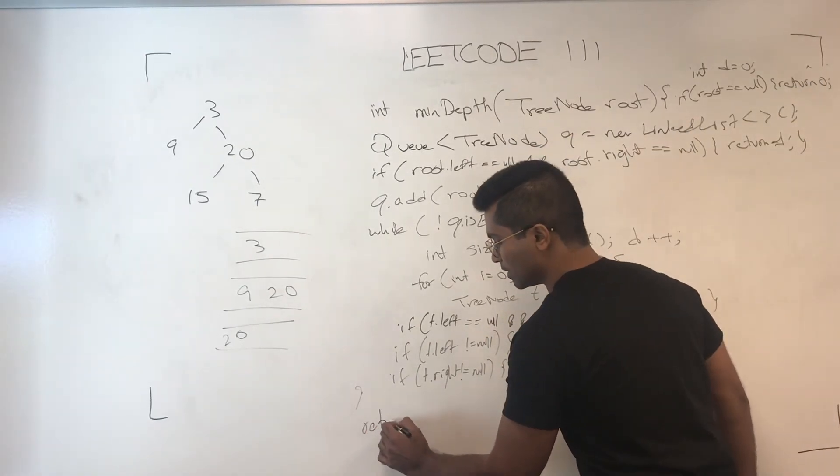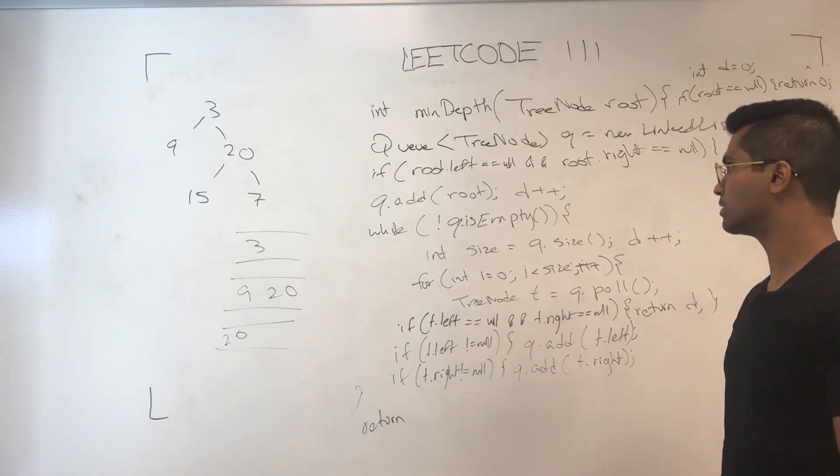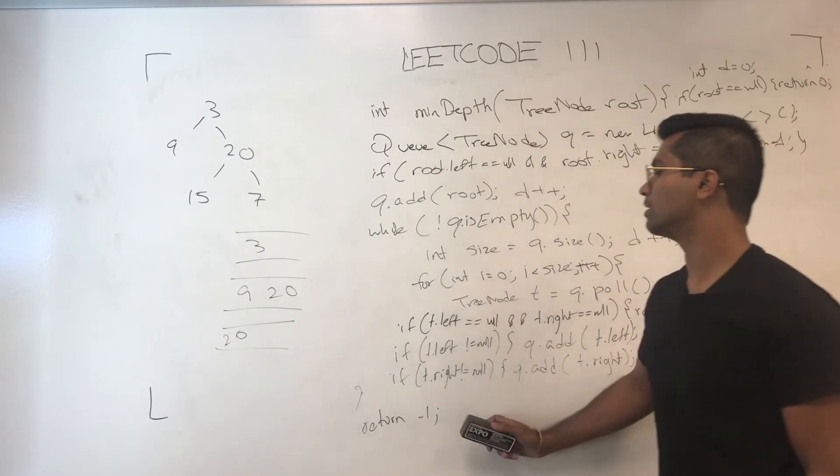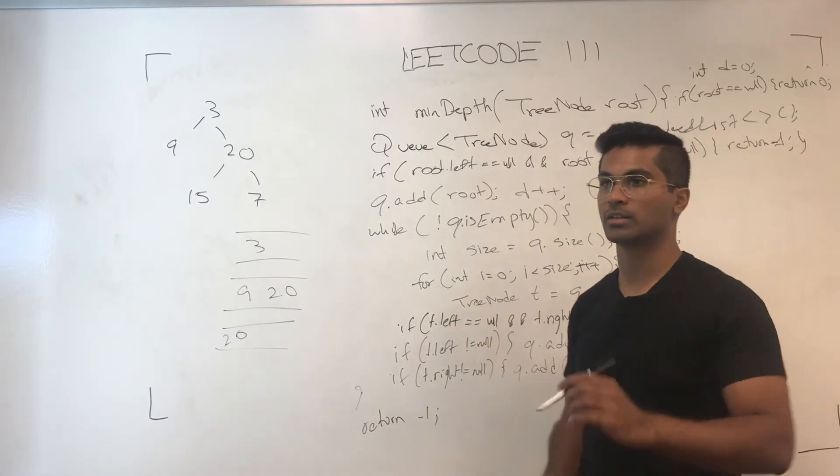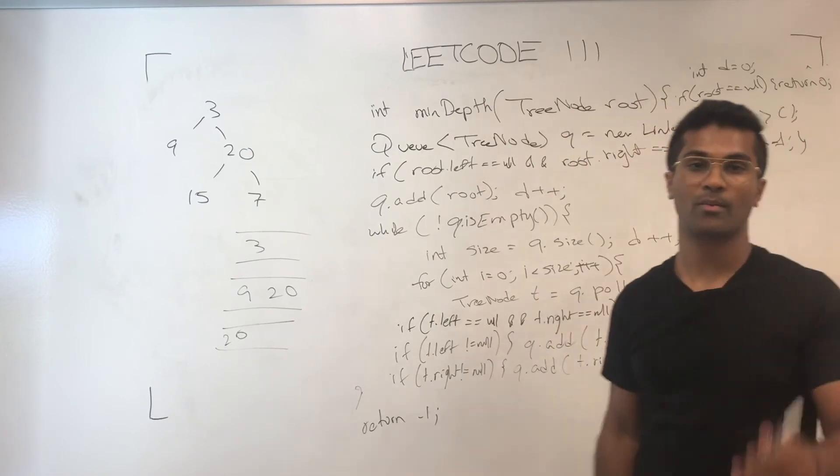If it doesn't work, I think just return negative 1. I can't remember, but I remember this is the logic that I used to find the depth. And that's one way you can solve LeetCode 111.